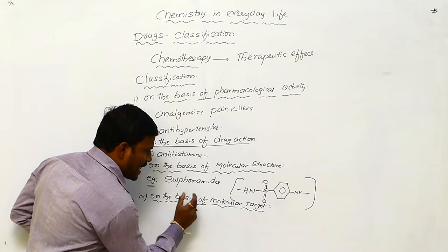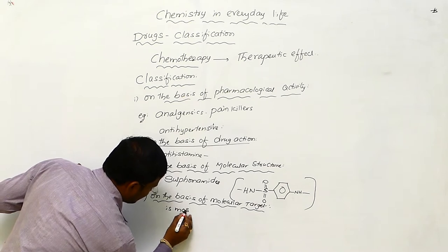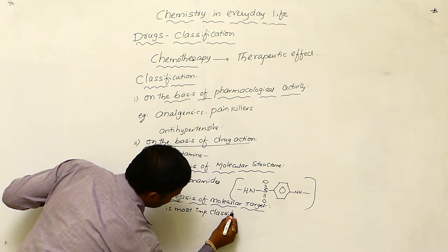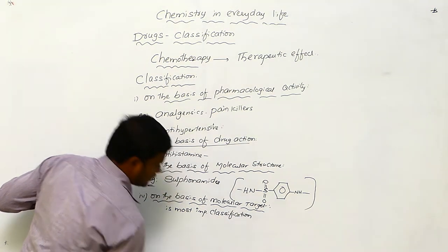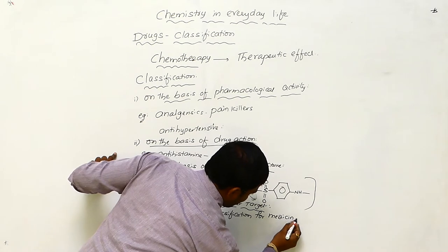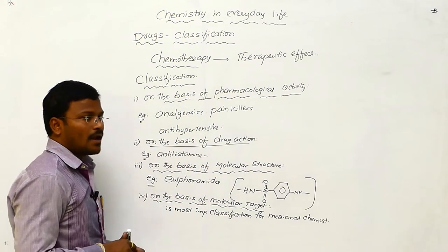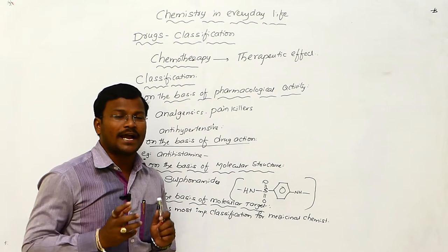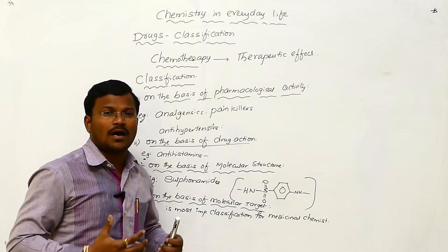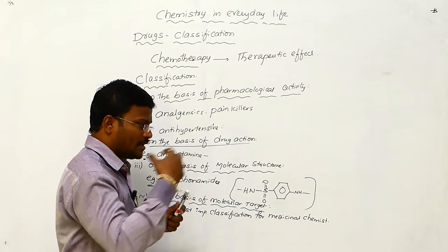The classification on the basis of molecular target is the most important classification for medicinal chemists. This type of classification can offer medicinal chemists the ability to identify the mechanism of action of drugs, and it offers an idea of how to develop a new drug to a selected target in our body.